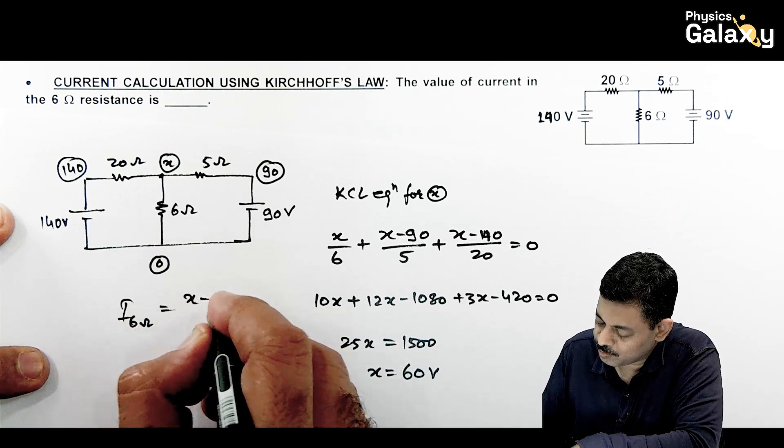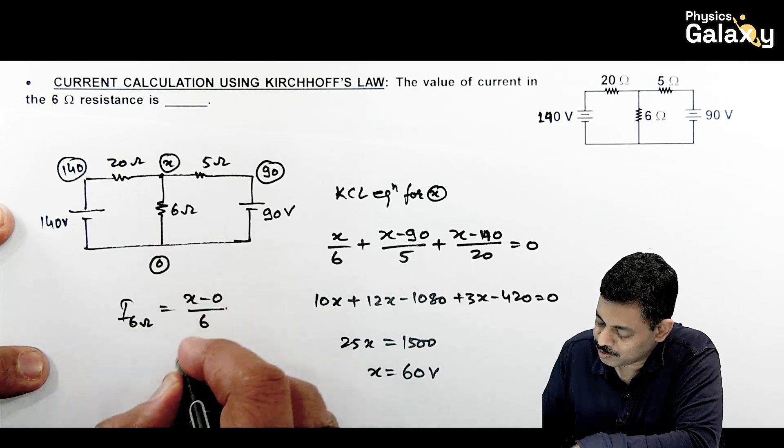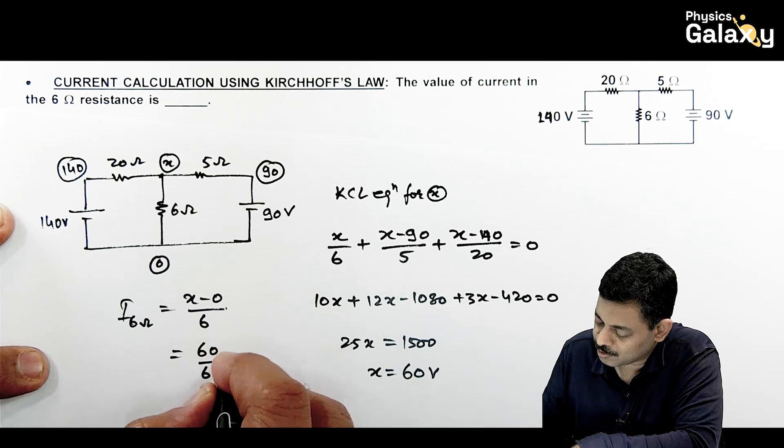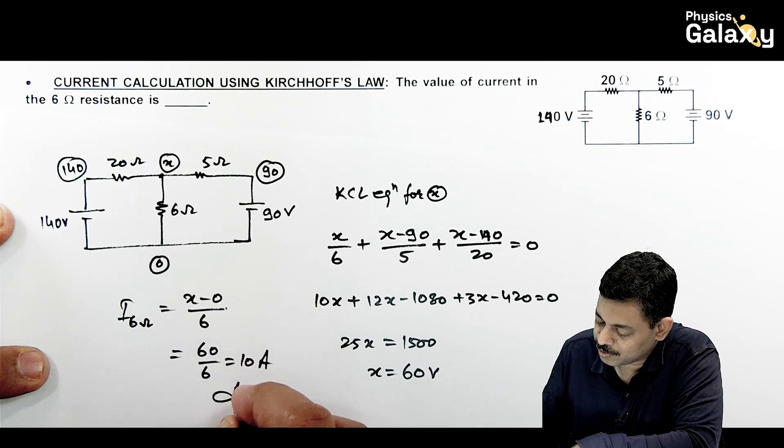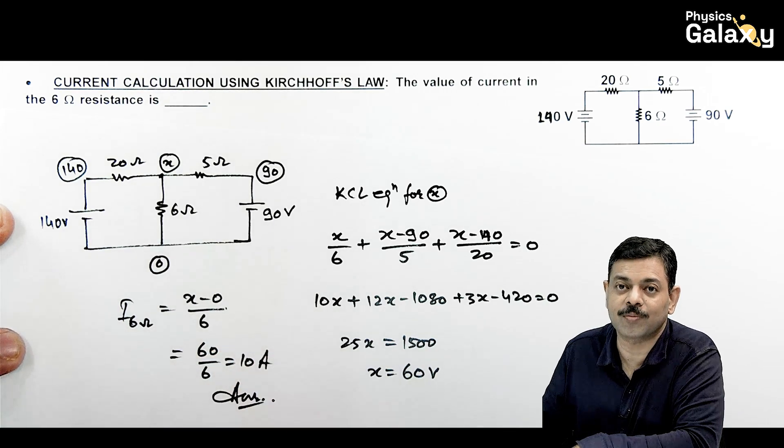The current through the 6 ohm resistance is (x − 0)/6 = 60/6 = 10 ampere. That is the answer to this problem.